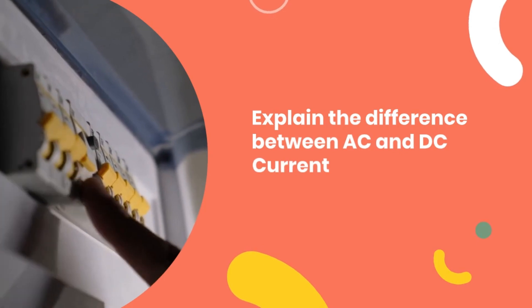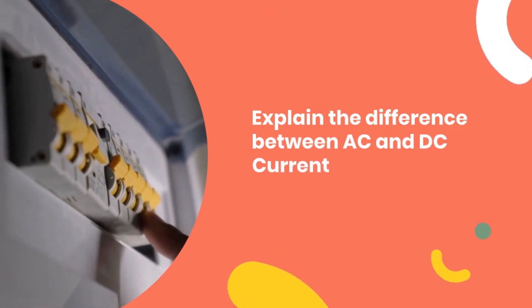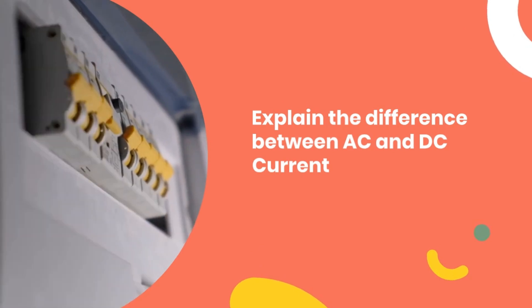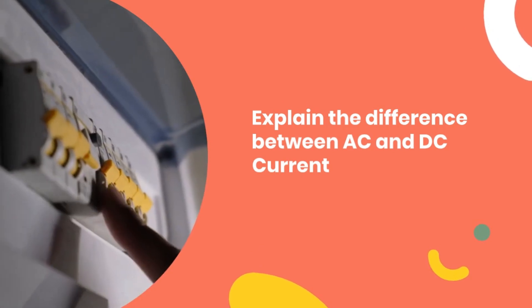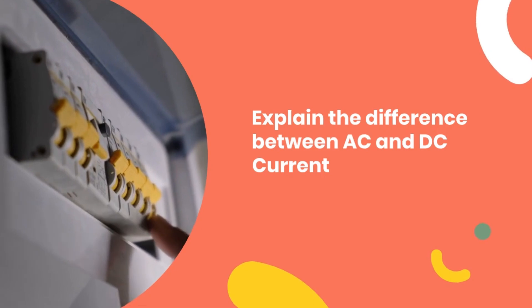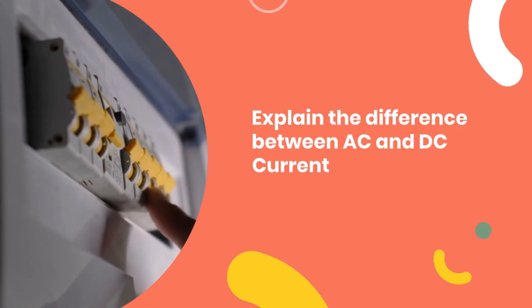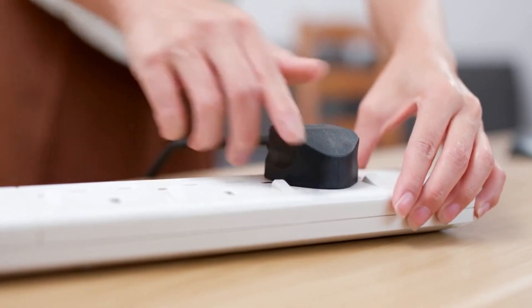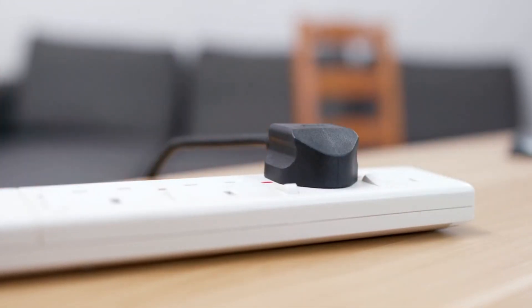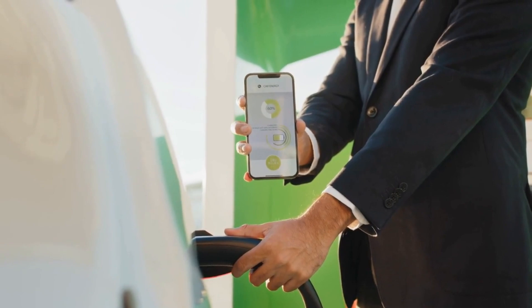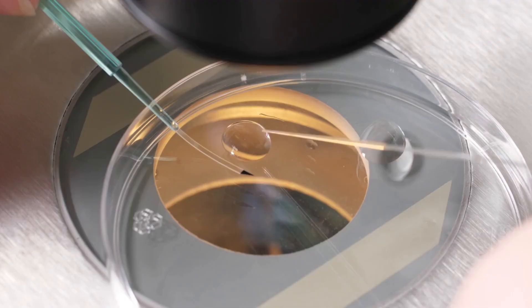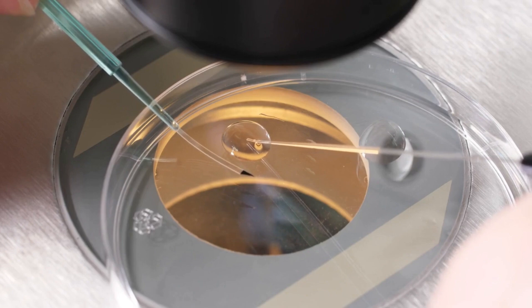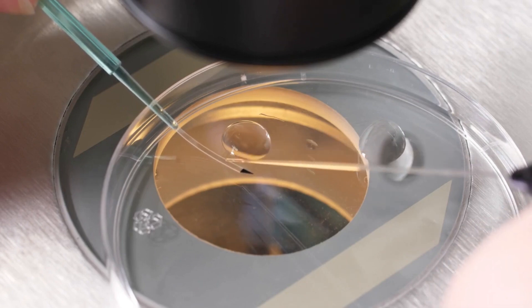Question eight: Explain the difference between AC and DC current. AC current changes direction periodically, while DC current flows in only one direction. AC, or alternating current, is used for power transmission because it is easier to transform and distribute, whereas DC is commonly used in battery-powered devices. Understanding this distinction helps in choosing the right power source for different applications.